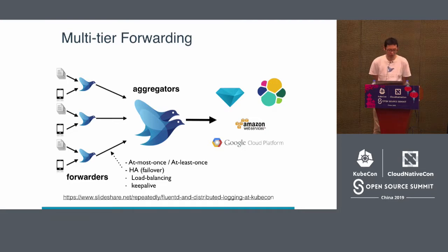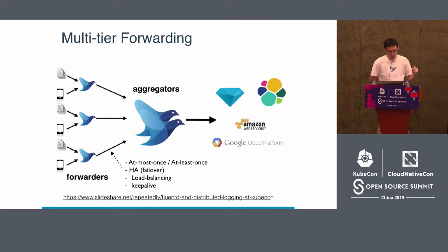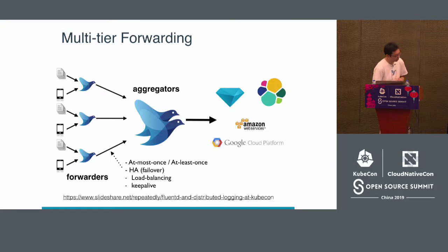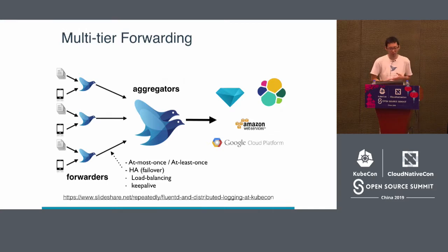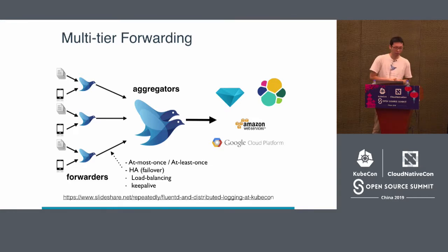Fluentd also supports multi-tier forwarding, mainly for high-traffic environments with many forwarders. Fluentd has its own forwarding protocol via the forward plugin, supporting two delivery semantics: at-most-once and at-least-once. The forward protocol also supports high availability and load balancing, and recent versions include keep-alive. This model has pros and cons. If you are interested, please check the previous KubeCon talk for more details on forwarder-side and aggregator-side approaches.